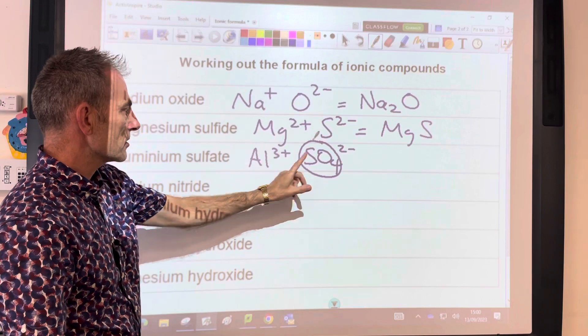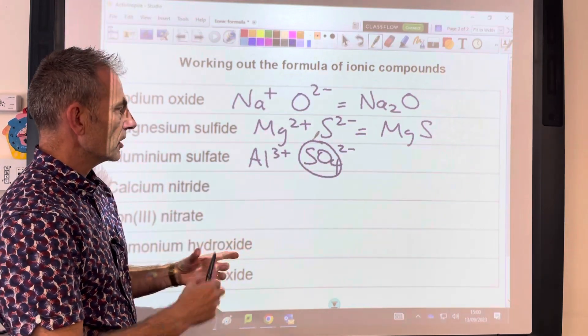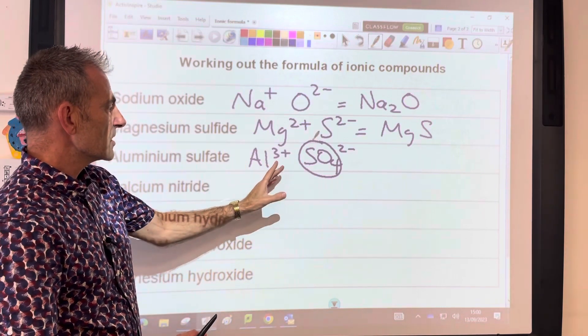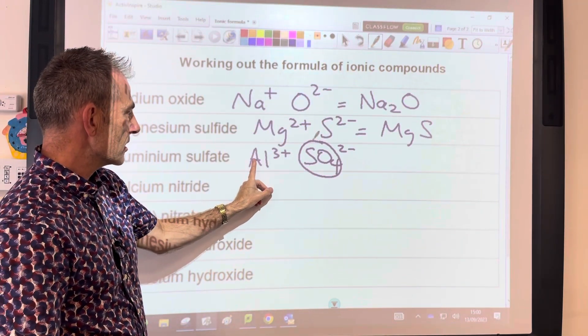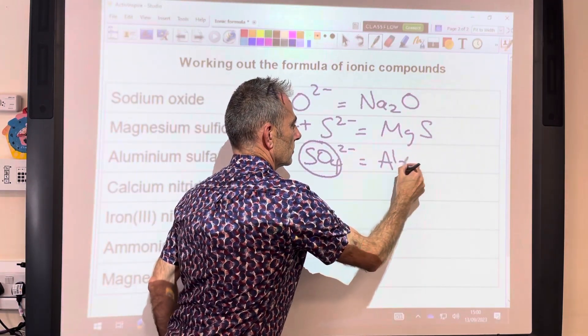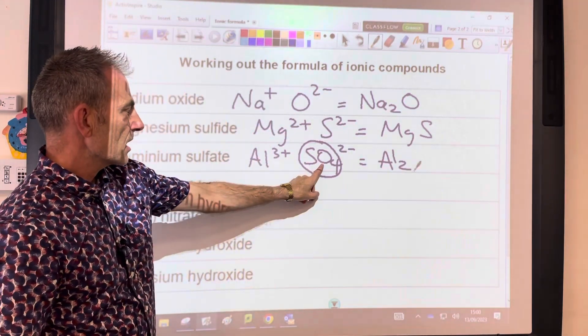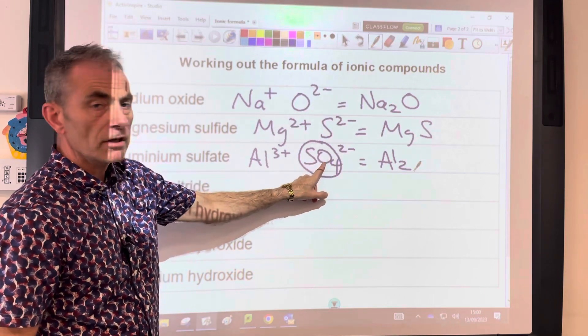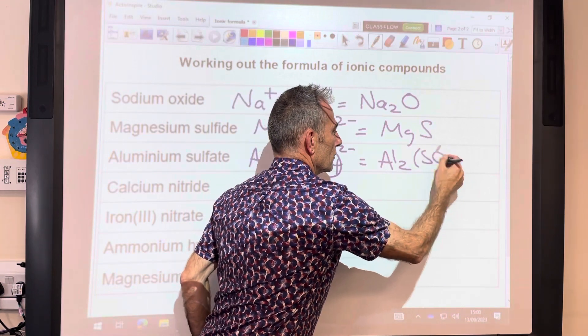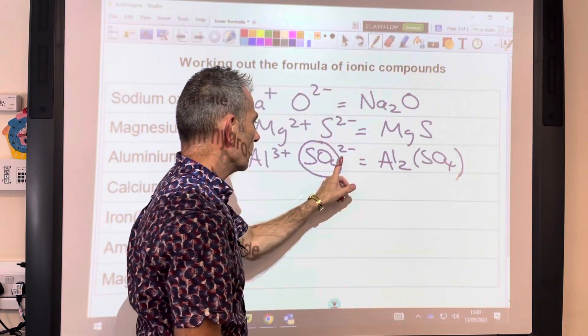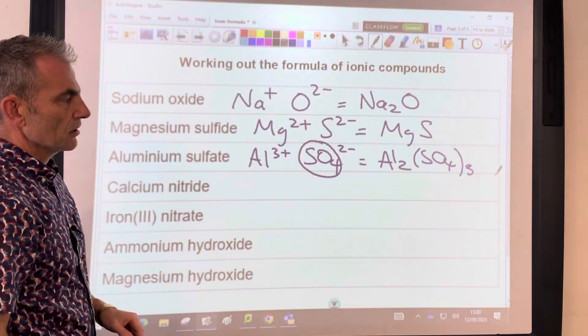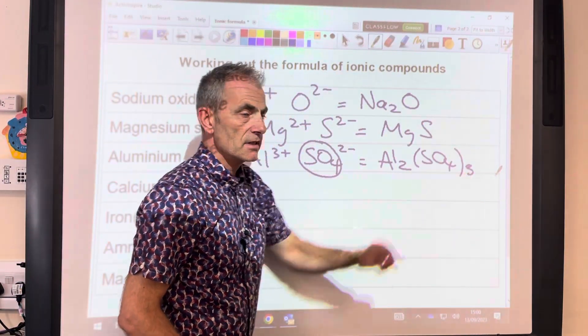So 3 plus, 2 minus. How are we going to get them to be equal and opposite? We'll get them up to 6. If we multiply this by 2, we'll get 6 plus. And to get this up to 6 minus, we need 3 of those. So what we're going to do in the formula is put that in a bracket, SO4 in the bracket, and then we need 3 of them. So we'll put a little 3 outside the bracket. The formula is Al2(SO4)3.